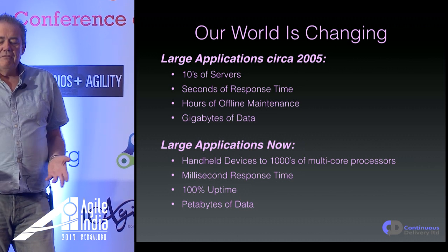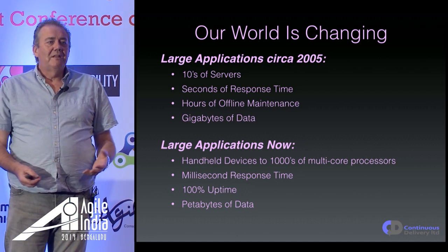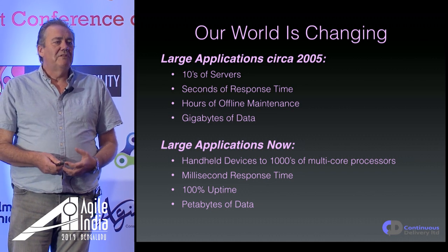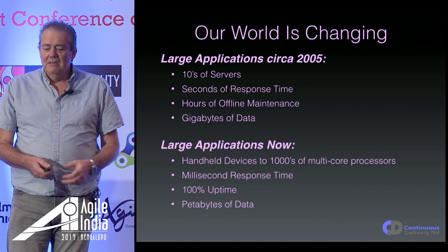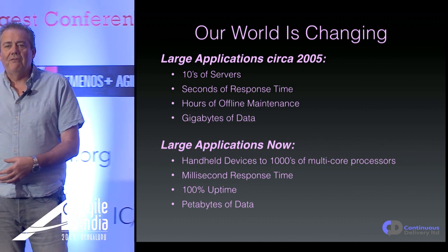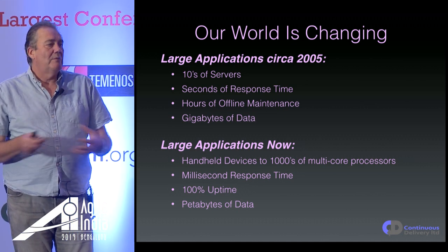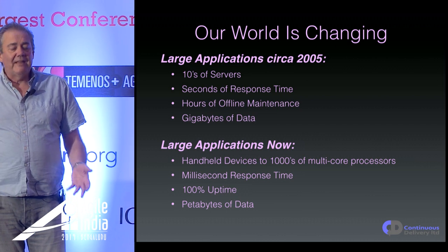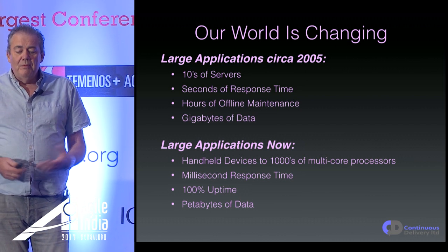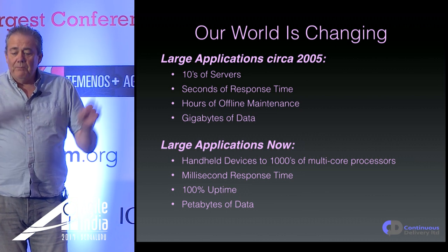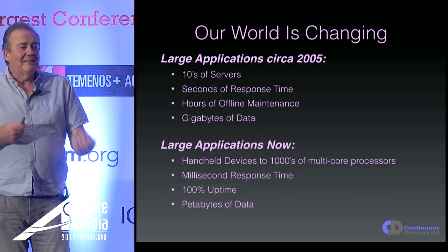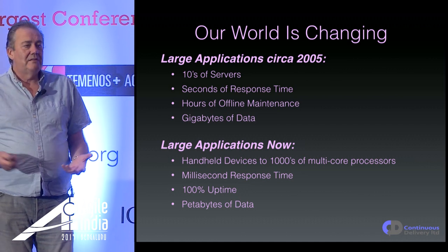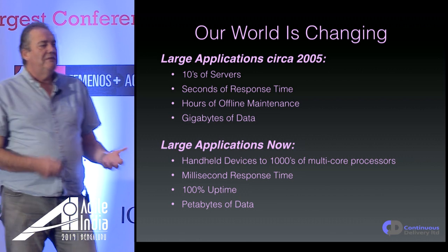In 2005, a large system would probably consist of tens of servers, need to respond in seconds, have a few hours for offline maintenance, and be processing gigabytes of data. A large application now is probably thousands of different points in a network, millisecond response time, 100% uptime, and petabytes of data. These are very, very different.